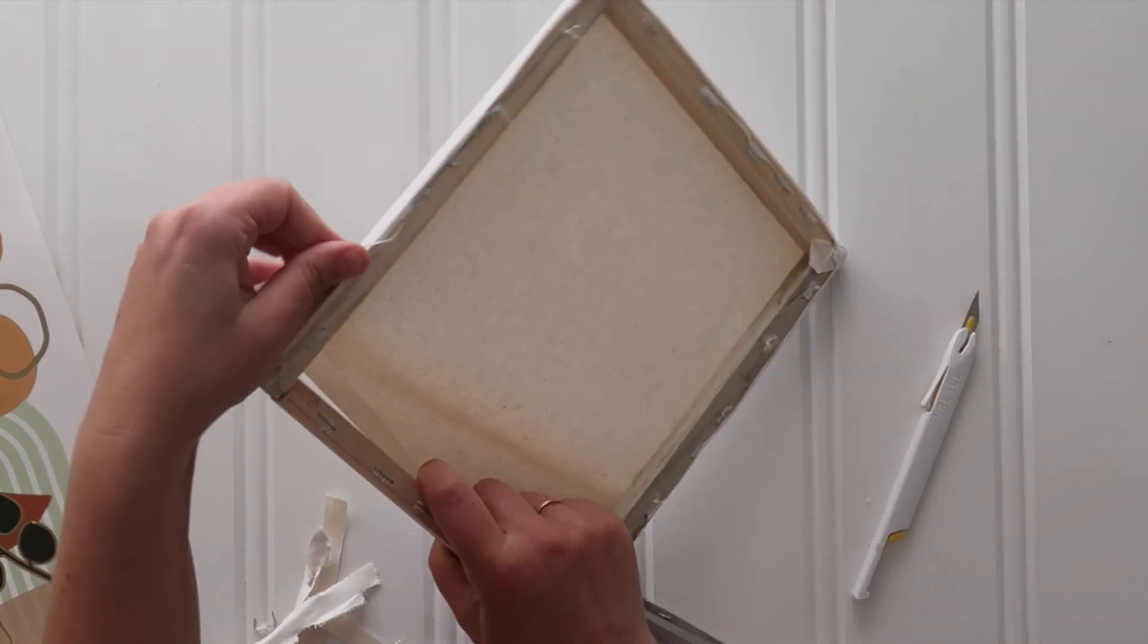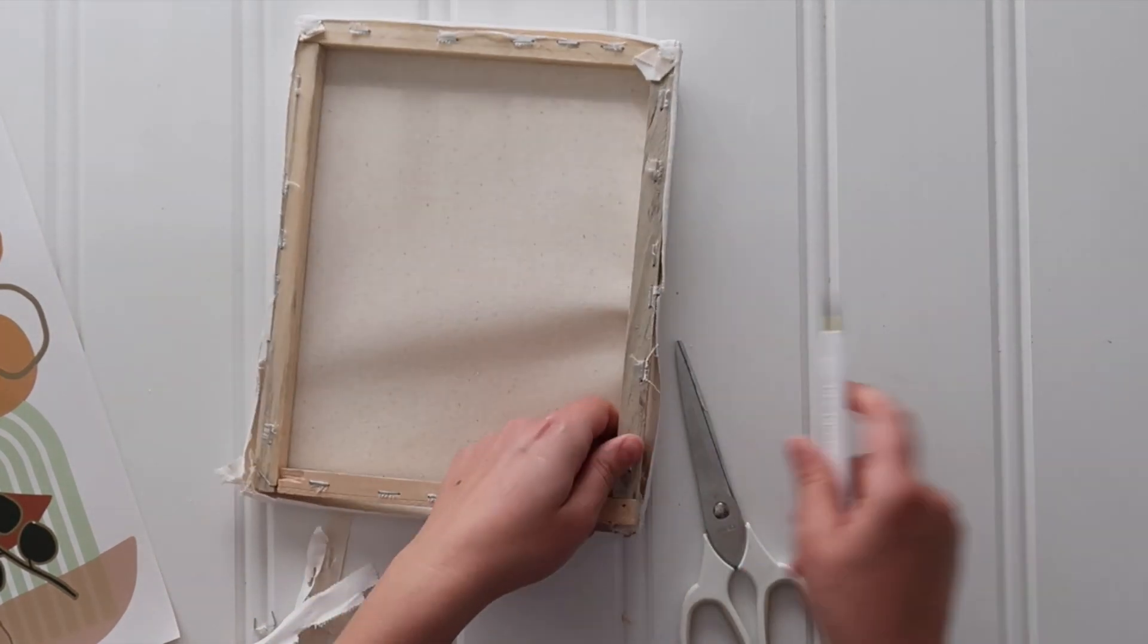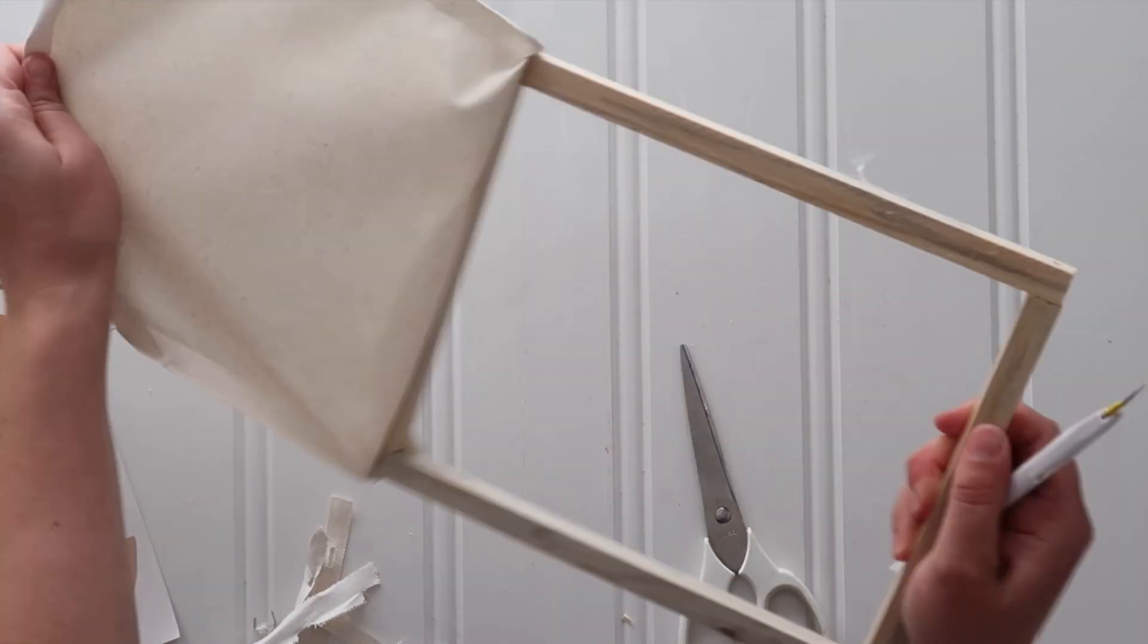Just cut away all of that canvas until you've completely removed that stretched canvas from that wooden frame, and then you have a cute little wooden frame that you can fill in.